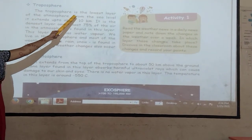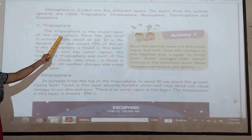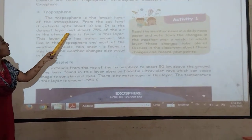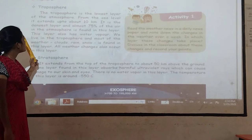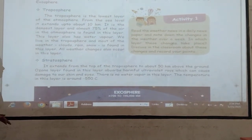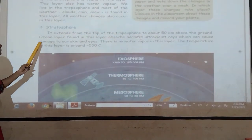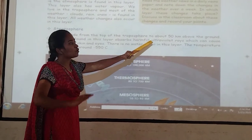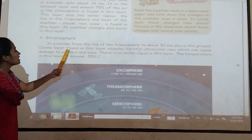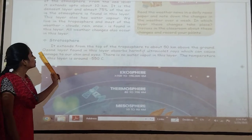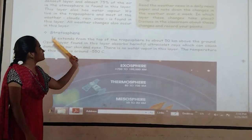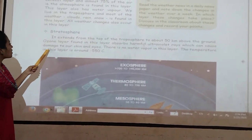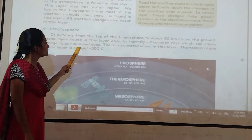The Troposphere is the lowest layer of the atmosphere. From the sea level, it extends up to 10 km. It is the densest layer and almost 75 percentage of the atmosphere is found in this layer. Then Stratosphere — it extends from the top of the troposphere to about 50 km above. The ozone layer is found in this Stratosphere layer.